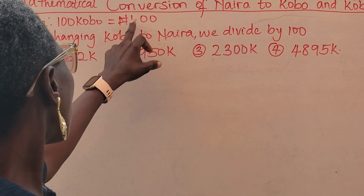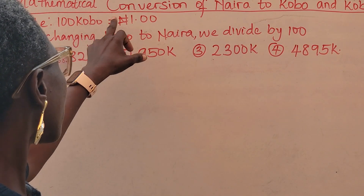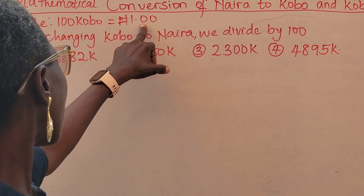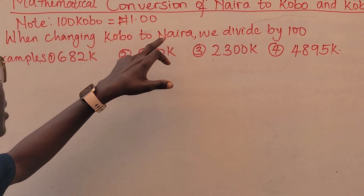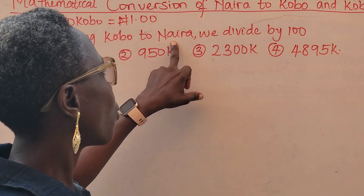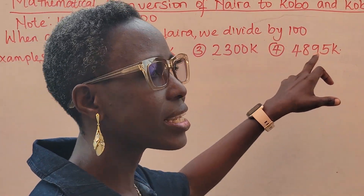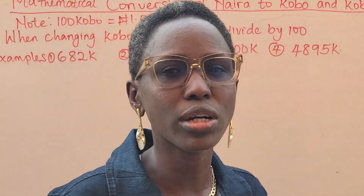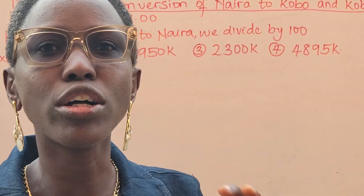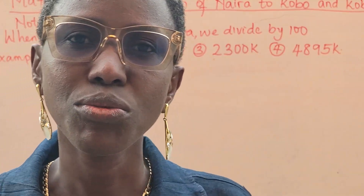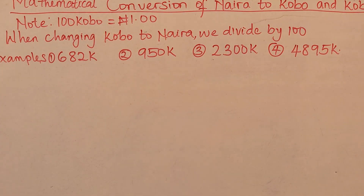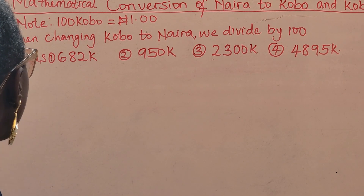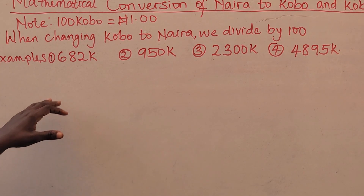Let's learn how to convert. 100 kobo equals 1 naira. So when you need to change kobo to naira, we divide whatever kobo is given to us by 100. That is all — it's as simple as that. I have some questions on the board and we will be solving them.